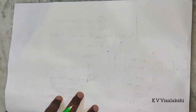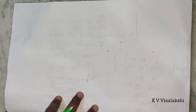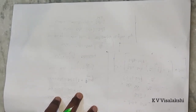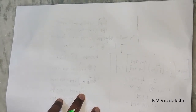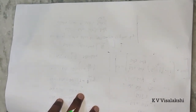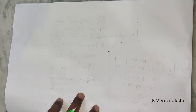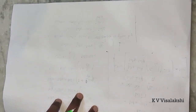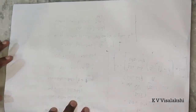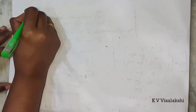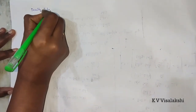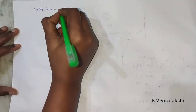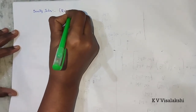Hi friends, I am Visal Akshi. In the previous lecture, we have seen different types of properties and specific gravity of solids and how to determine the specific gravity of solids with various methods. So in this video, I will explain about the next property with respect to soil — it is nothing but density index. This density index we can also call it as relative density.